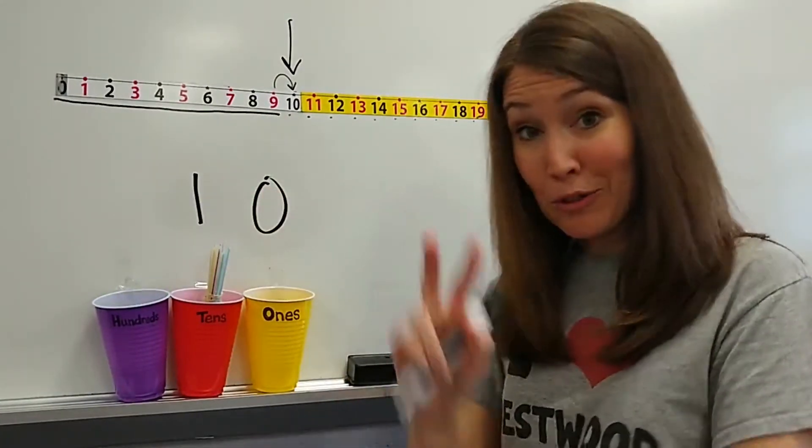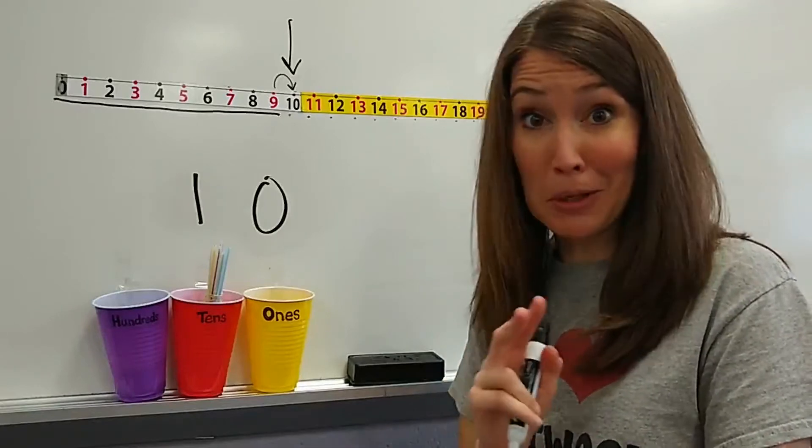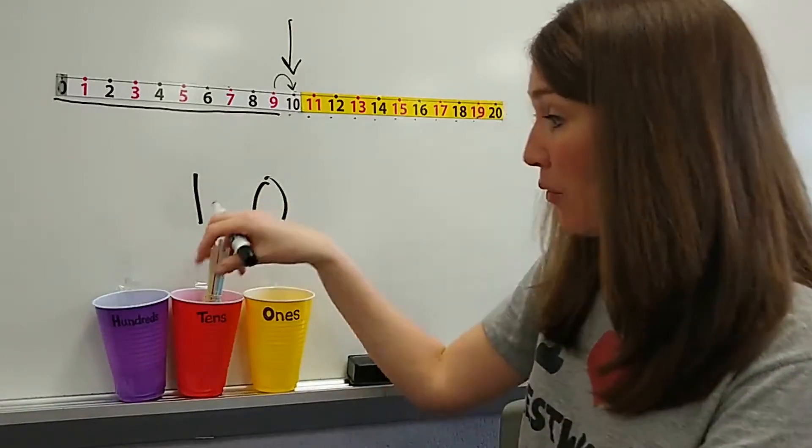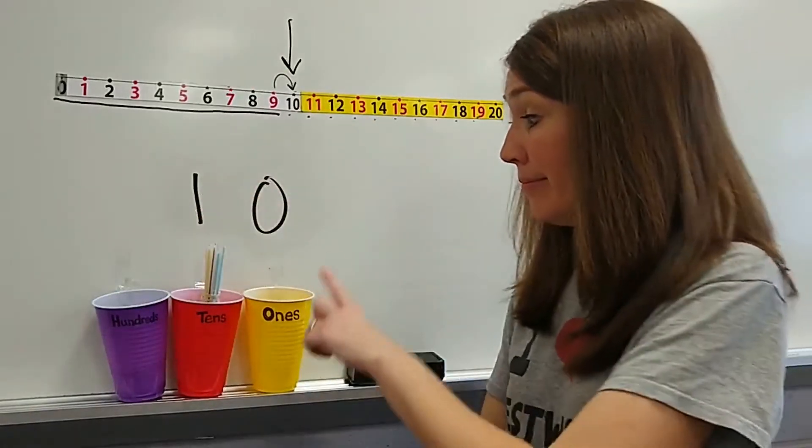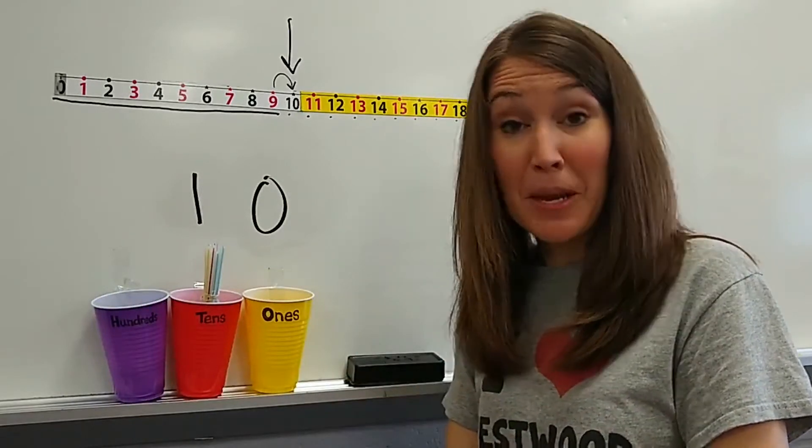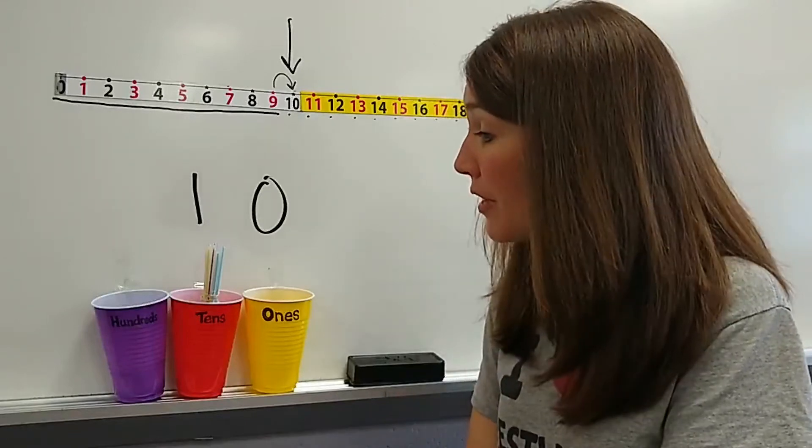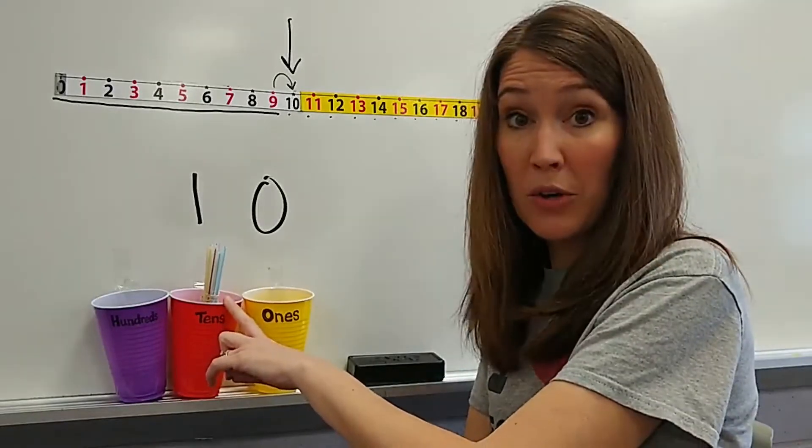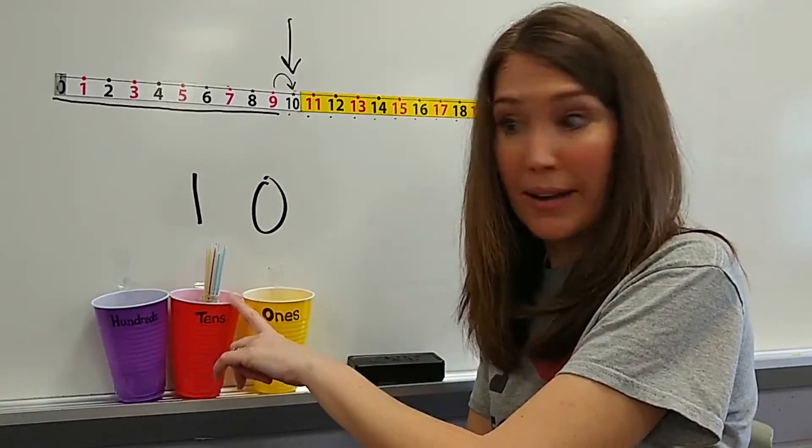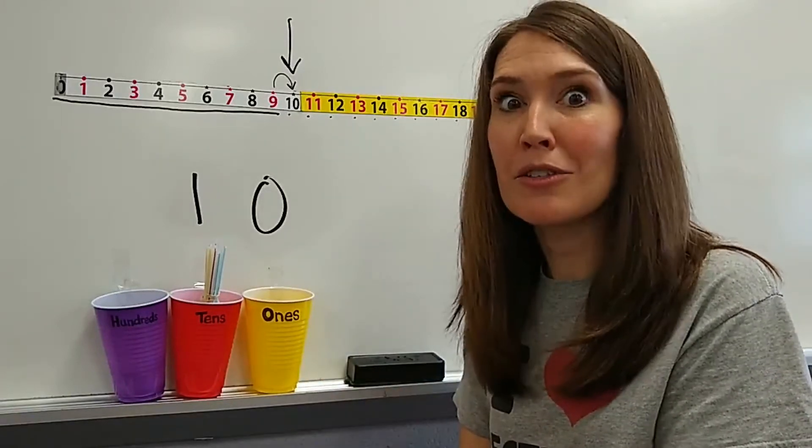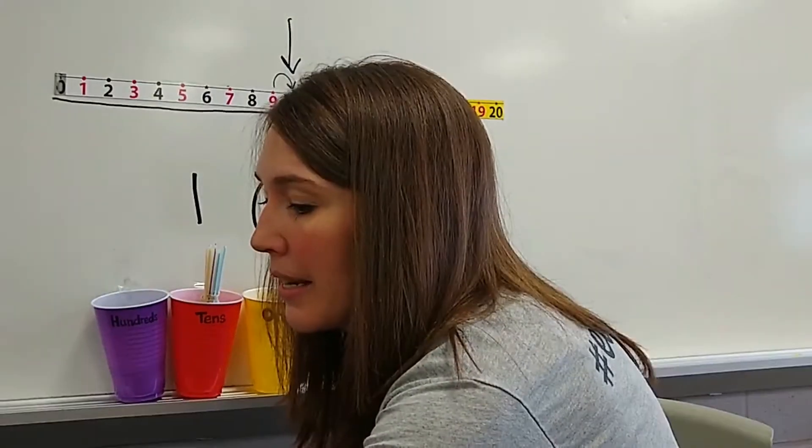The number 10 with two digits tells us a special code. It tells us we have one group of 10 and zero more ones. The numbers stand for something. They tell us something. So all the numbers in the tens family have one group of 10. They start with that one, but they have different numbers of ones. So let's add some more straws and see what happens.